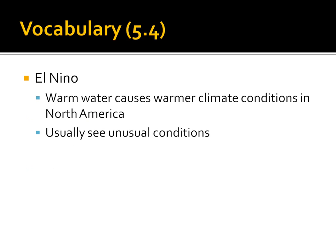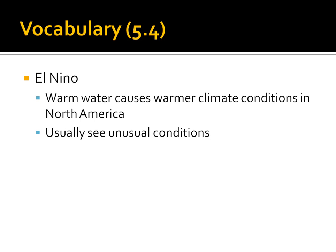One of the ways oceans affect us is what's called El Niño — there should be a tilde above the N, but it couldn't be found in the PowerPoint. El Niño refers to warm water which causes warmer climate conditions in North America. It's like when you take a hot shower and the bathroom gets warmer — the same concept applies: warmer water off the coast causes warmer conditions on land. We usually see some unusual conditions that come along with El Niño.